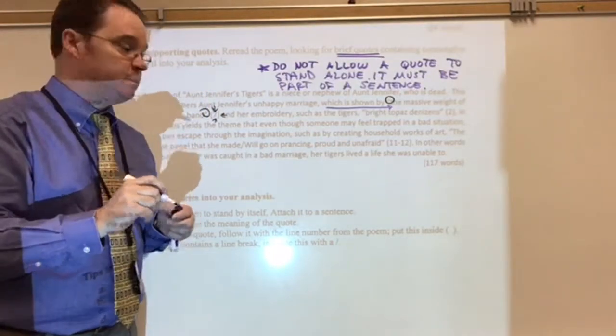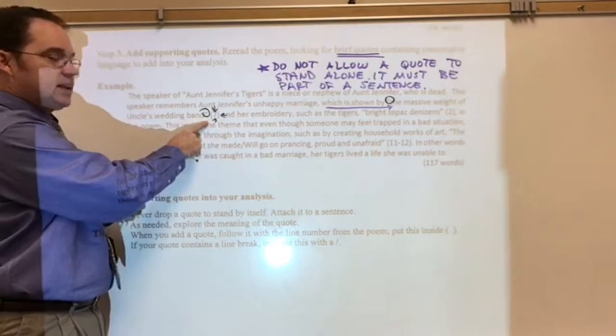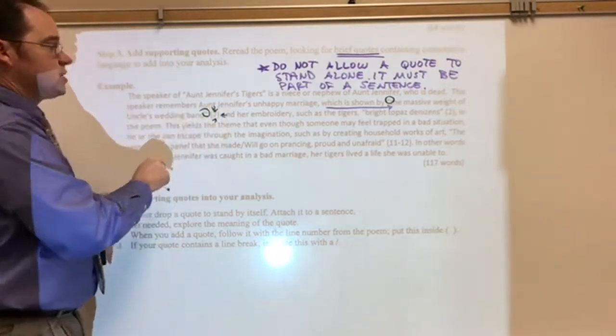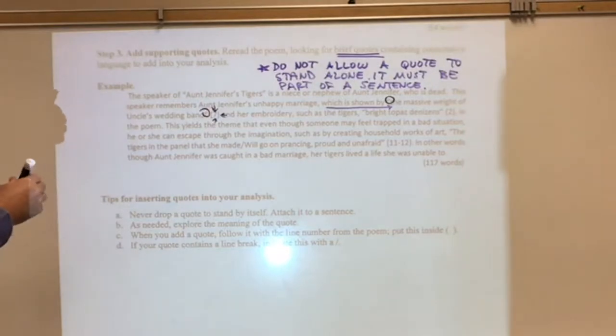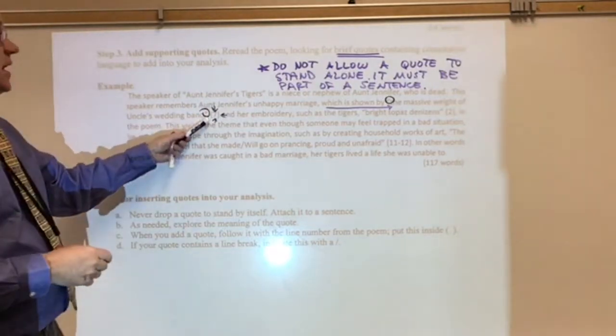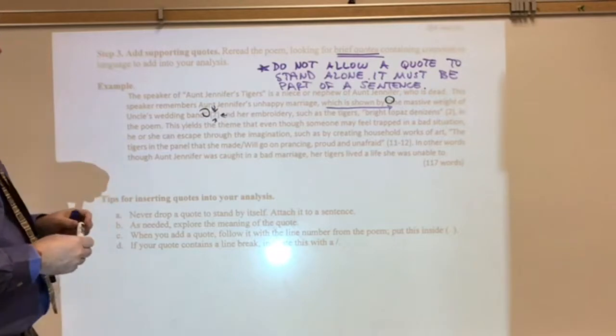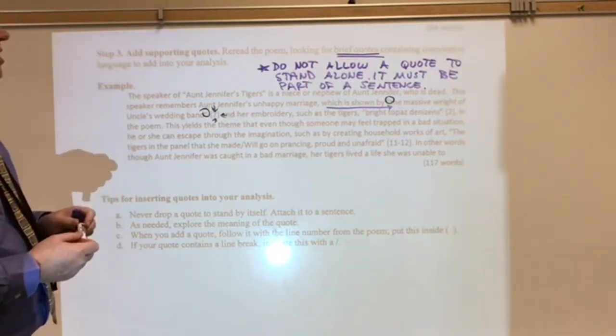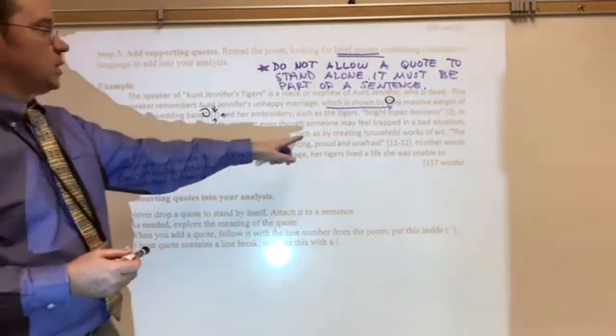Now, with poetry, what you put for the citation are line numbers. So, this lets the reader know that that brief quote came from line seven, which is shown by the massive weight of Uncle's wedding band and her embroidery, such as the tiger's.